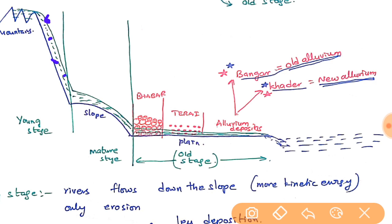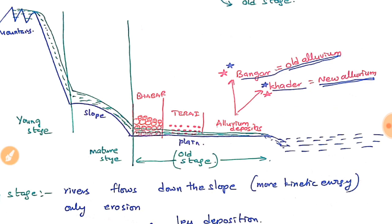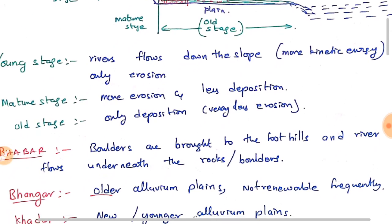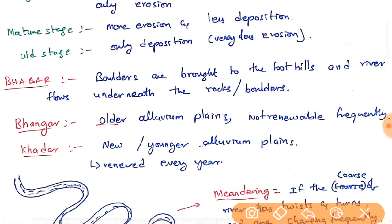In the old stage, more deposition takes place. Two types of soils are deposited in these plains: Khadar and Bhangar. Khadar is new alluvium soil and Bhangar is old alluvium soil. Easy to remember: Khadar = new, Bhangar = old. Boulders brought to the foothills form the bobber zone where the river flows underneath.